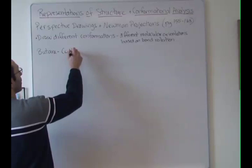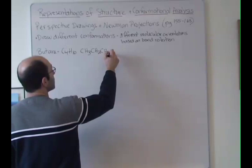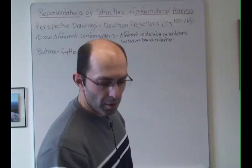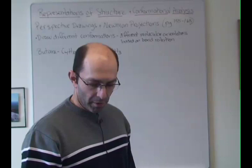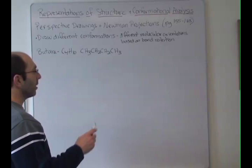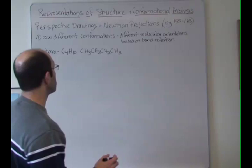As we said in class, butane is C4H10, and it's CH3-CH2-CH2-CH3. So make sure you have a molecule of butane made out — your molecular model of butane. We're going to need that as we try to look at a couple of different conformations of butane. So we're going to look at two, and then we'll see what the Newman projections look like.